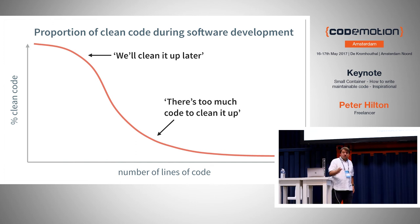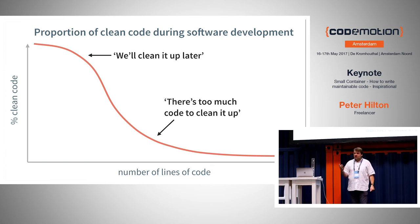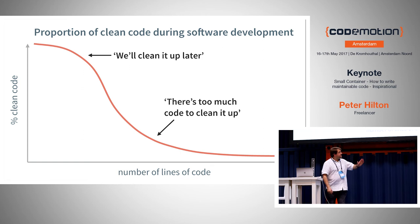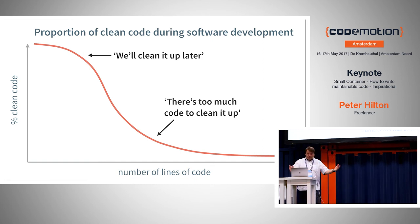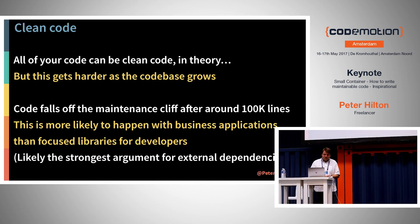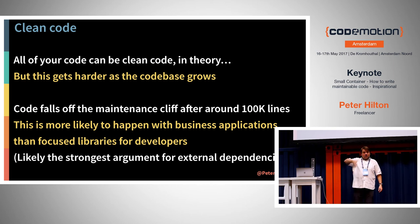When you start a project, you need to ask your business stakeholders: what is the expected lifetime of this system? Can we throw it away after three months because it's a marketing campaign? After five years because it's a product that will be replaced? Or are we going to have to maintain this for 30 years because it's a baggage handling system at a major airport? This is an important question. My gut feeling is that 100,000 lines of code is when the cliff starts to happen, and it happens quite quickly if you don't actively push back.